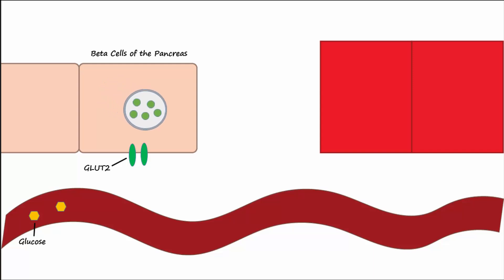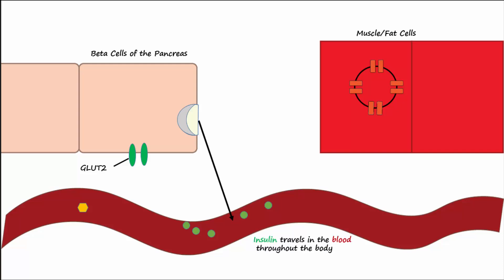Insulin then leaves the pancreas and travels throughout the body. It will bind to insulin receptors located on muscle and fat cells. The binding of insulin to its receptor leads to activation of a second messenger system.